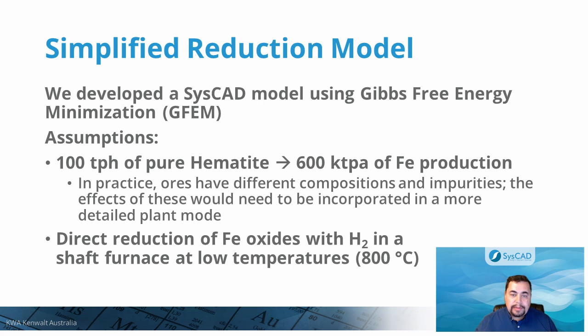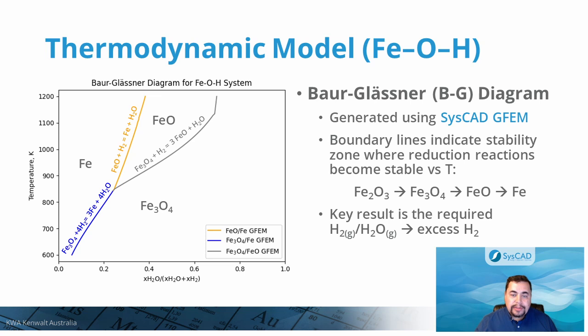When we look at direct reduction of iron oxides at relatively low temperatures, say below 1,000 degrees centigrade, the Bauer-Glassner diagram shows the boundary lines where the reduction of various oxides takes place as a function of the gas composition, more specifically as a function of the fraction of water vapor. To produce metallic iron at around 800 degrees Celsius, almost 70% by volume of the gas must be hydrogen, meaning a high circulating load of hydrogen is required to maintain the low oxygen potential required to produce iron. It is then of critical importance that our reactor model can accurately predict the phase stability for this system.